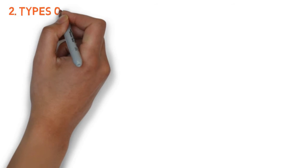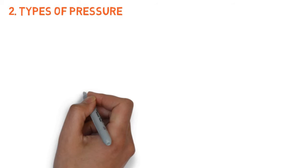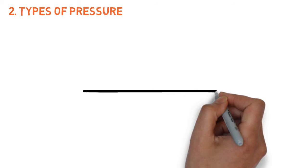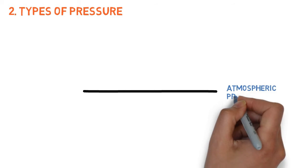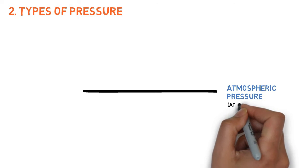Types of pressure. There are different types of pressure. We will see five important types of pressure here. Atmospheric pressure at sea level.